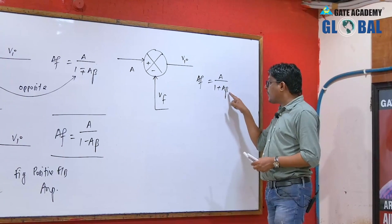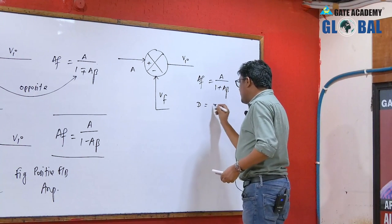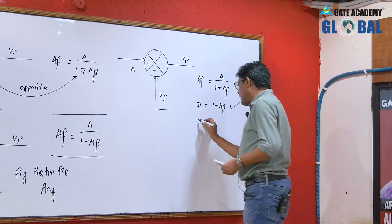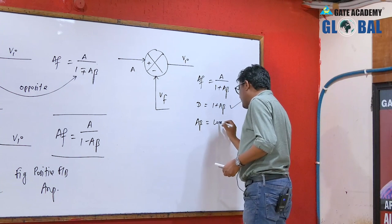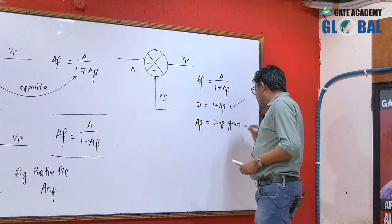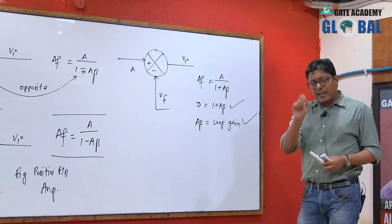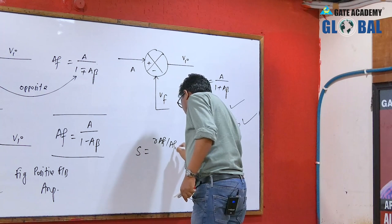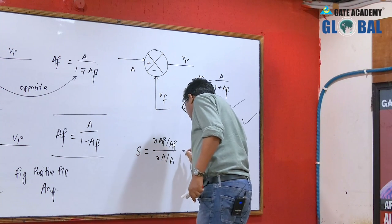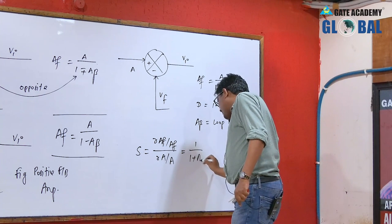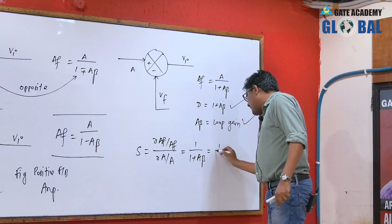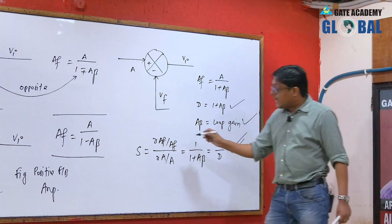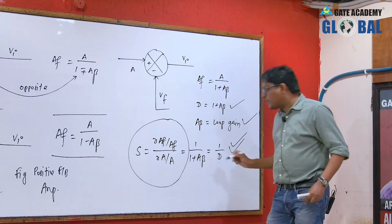The feedback gain is A upon (1 plus A·beta), where D equals (1 plus A·beta). This D is referred to as D sensitivity. A·beta is referred to as the loop gain. We can now describe one important terminology — sensitivity — which is defined as the change in feedback gain with respect to change in forward gain, and equals 1 upon (1 plus A·beta).